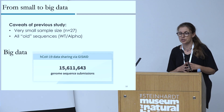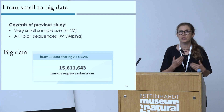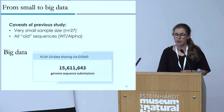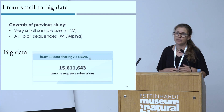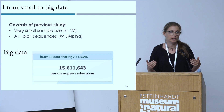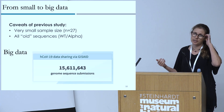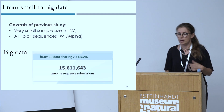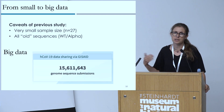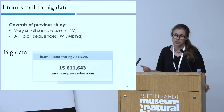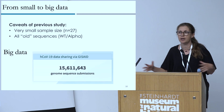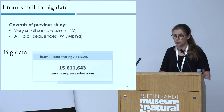Here we turn to what's called big data. Today we have over 15.6 million sequences available on a public repository called GISAID, and literally every week the database increases further. Labs all over the world constantly submit sequences. For a bioinformatician, this is wonderful — tons of amazing data.